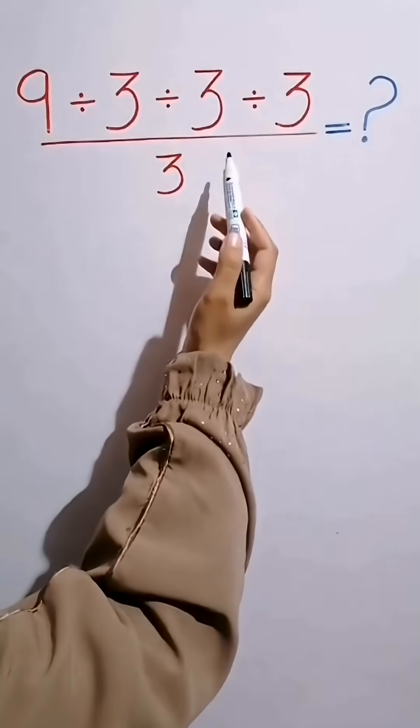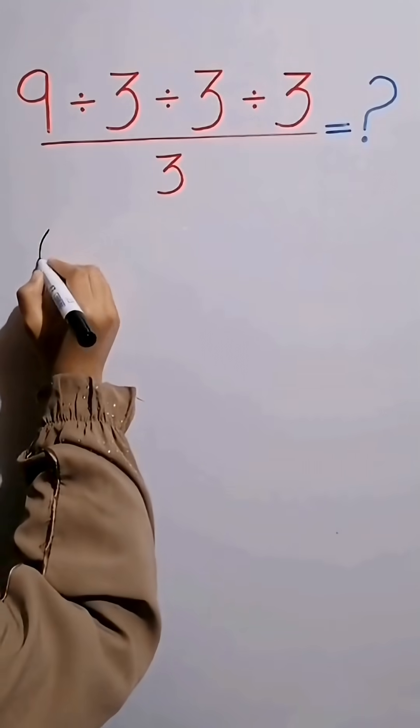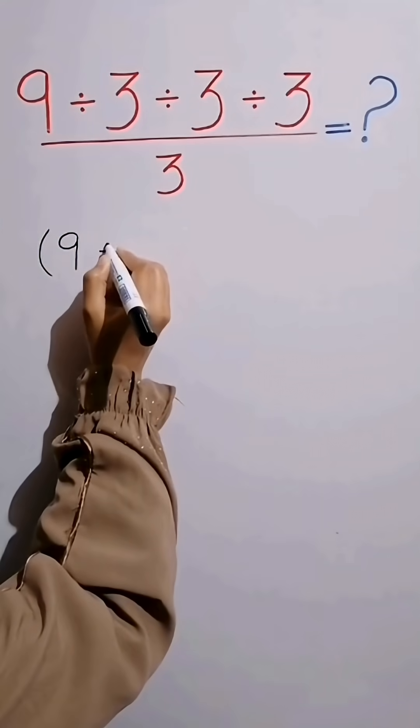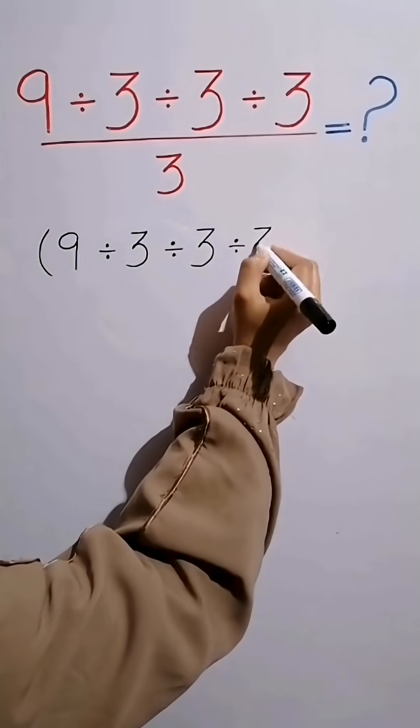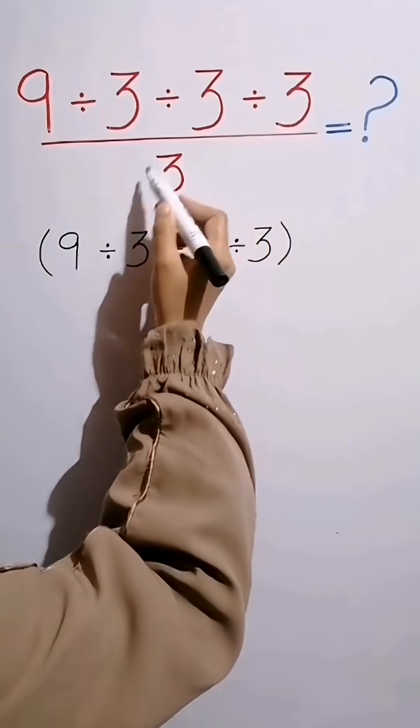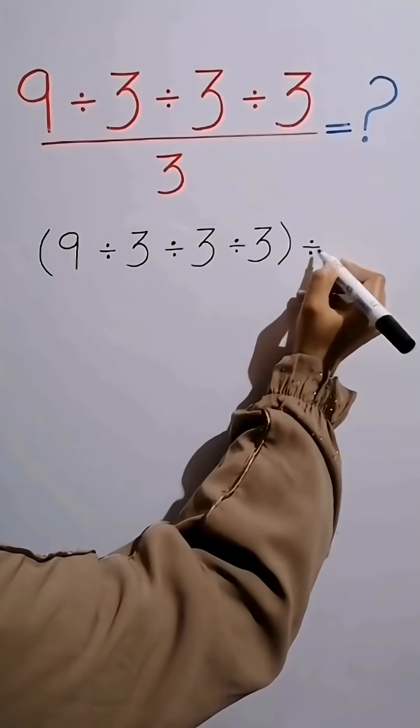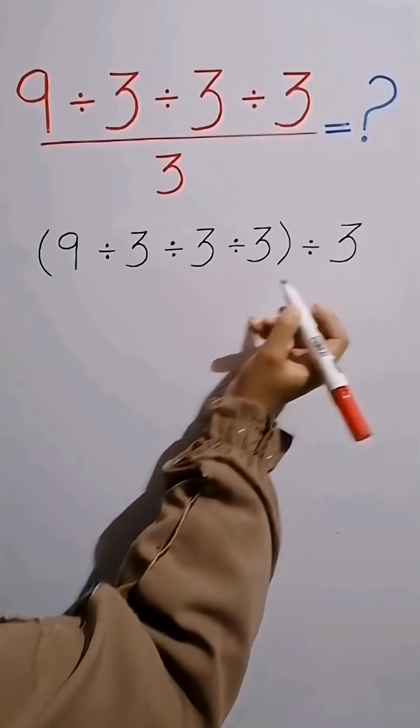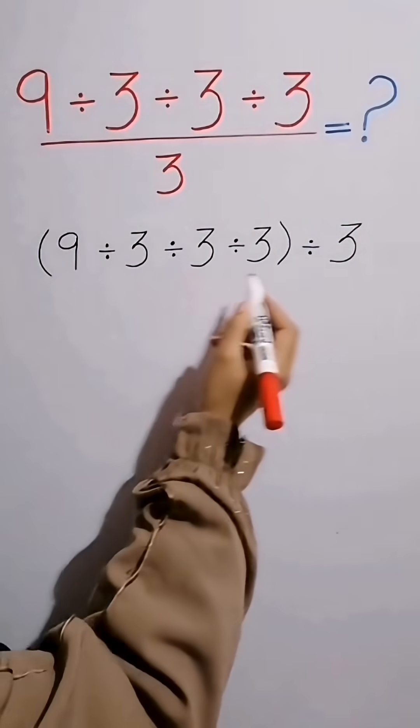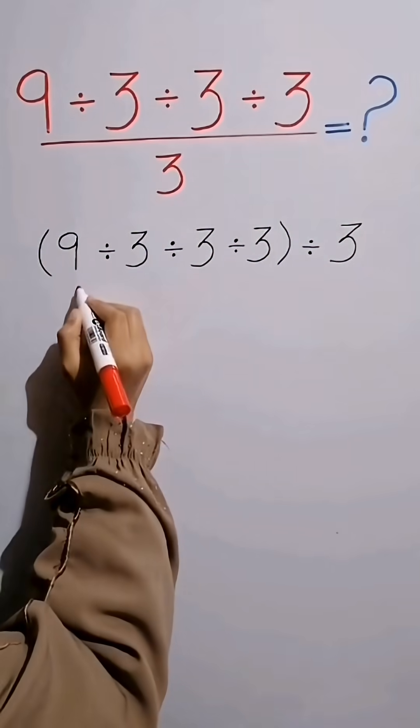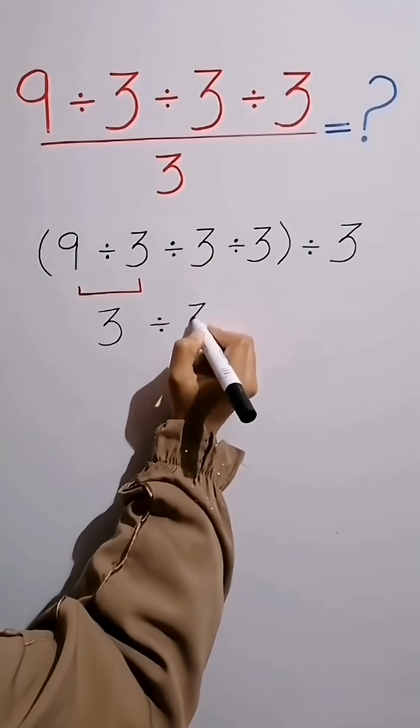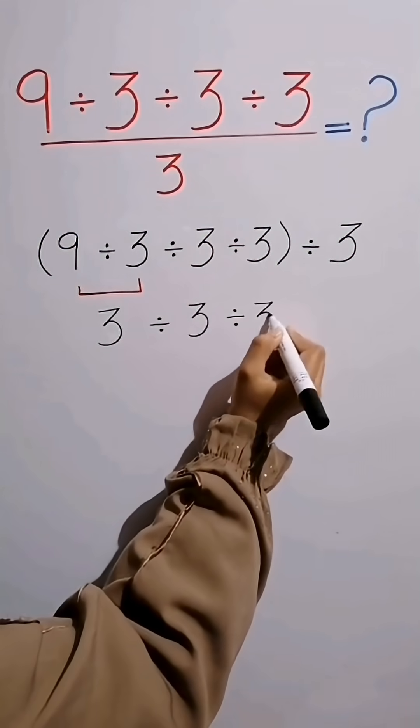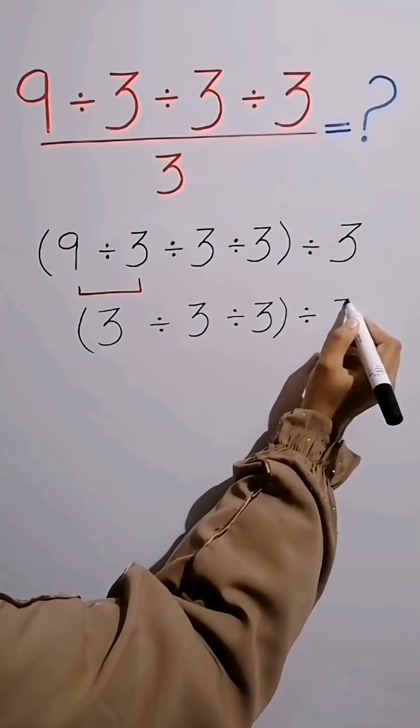First we simplify the fraction. We write the fraction as an expression. Okay guys, we start from the left side of the expression and simplify. 9 divided by 3 equals 3. Then divide it by 3 divided by 3 inside the parentheses, and bring down divide it by 3.